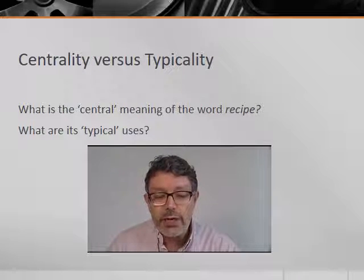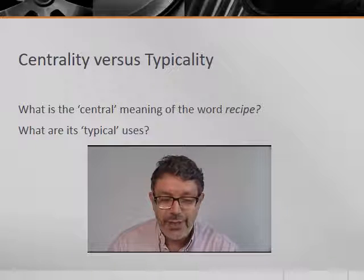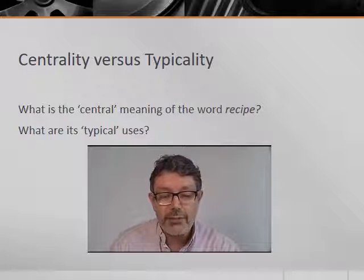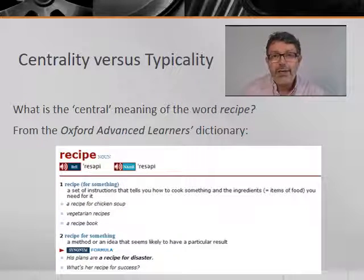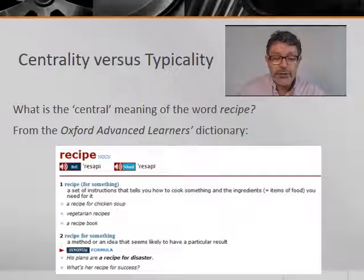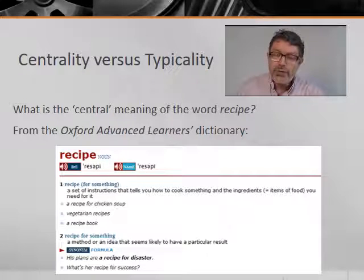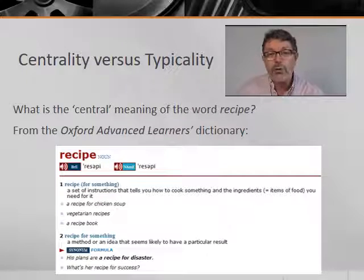One issue that concordance programs throw light upon is whether the central or metaphorical meaning of a word or phrase is typical of its use. We can illustrate this by looking at one of Susan Hunston's examples: namely, recipe. If you look up the word recipe in a standard dictionary, such as the Oxford Advanced Learner's Dictionary Online, you will see at least two possible meanings. The first is usually the literal or central meaning — a set of instructions for cooking something together with a list of ingredients. The second sense is more metaphorical: any method or idea that seems likely to have a particular result. The question the dictionary does not necessarily answer is which of these two meanings is actually typical, or which sense occurs more frequently in a corpus. A concordance search will help to answer that question.